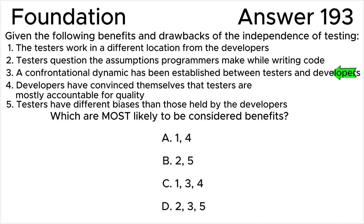Statement 3: A confrontational dynamic has been established between testers and developers. The main disadvantage of independence in testing is that testers may become isolated from the development team, leading to communication problems, a lack of collaboration, and potentially an adversarial relationship with testers being blamed for delays and bottlenecks in the release process. Thus, this is a disadvantage.